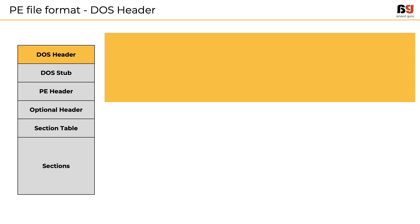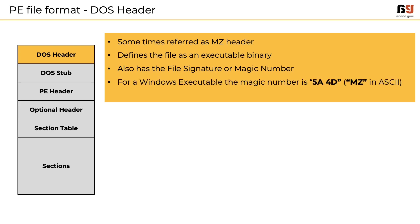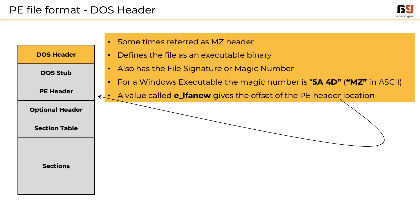The first part of a PE file is called the DOS header, also referred to as the MZ header. It defines that the file is an executable binary. The DOS header holds something called a file signature or magic number. For Windows executables, the magic number is 5A4D in hexadecimal and MZ in ASCII. The DOS header also contains a value called e_lfanew, which tells the operating system where to find the PE header location.